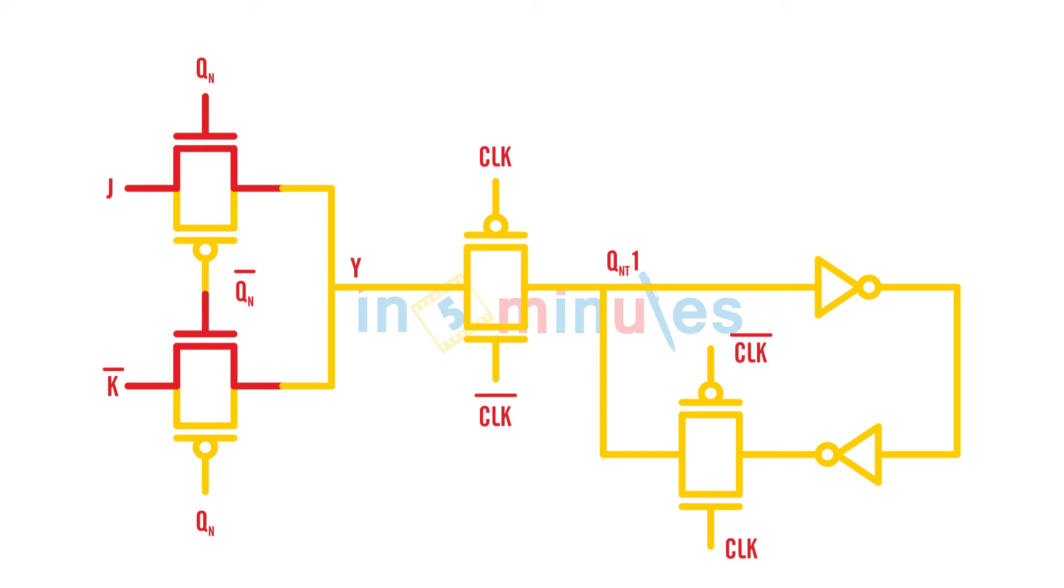Here we'll call this terminal as clock and this is clock bar. Now if you see, put some values to clock, put some values to J and K, and you can see that you'll be able to verify with the truth table.